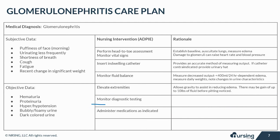Monitor diagnostic testing, including electrolyte levels: calcium, sodium, magnesium, and potassium. Electrolyte imbalances can lead to muscle weakness or spasticity and affect cardiac output.